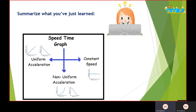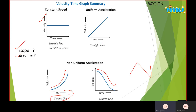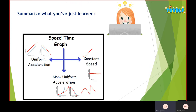Quick summarization: for constant speed, a straight line parallel to the x-axis; for non-uniform acceleration, a curved or zigzag graph; for uniform acceleration, a straight line moving up or down. Whenever you see a graph, you can tell whether it shows uniform acceleration, non-uniform acceleration, or constant speed. For more detail on uniform and non-uniform acceleration, check out my video.